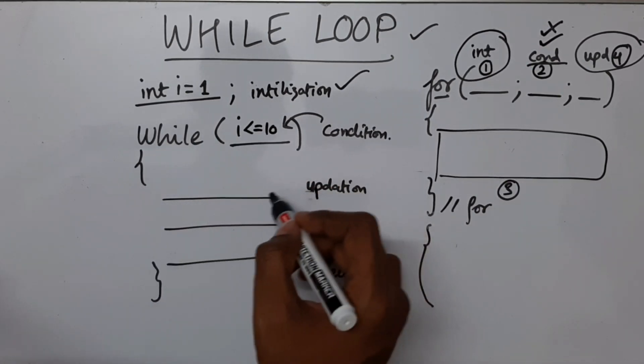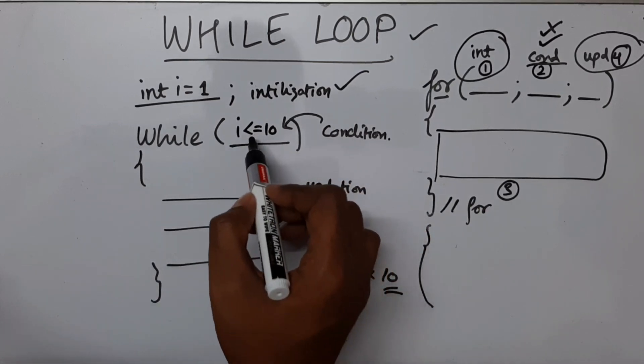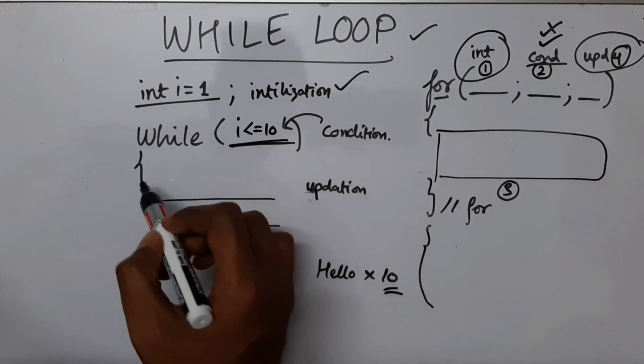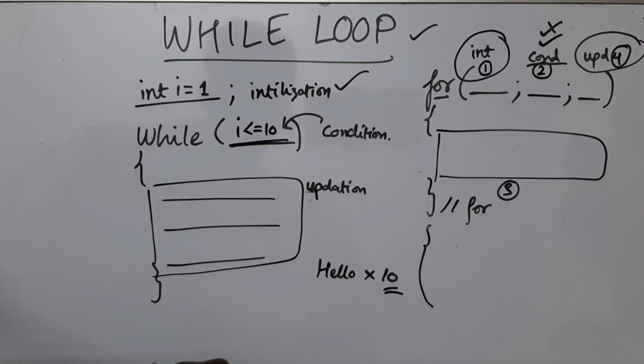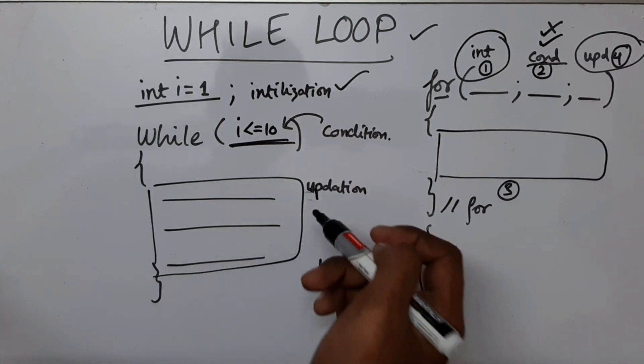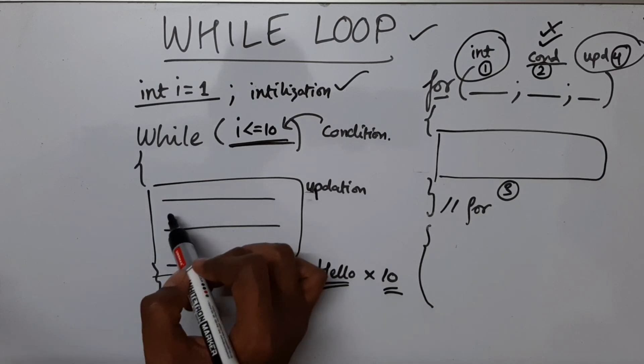I am going to tell while i is less than equal to 10, we have to go inside the loop. Okay, this condition basically means if this is true, you go inside the body of the while loop. Okay, so inside this, what we are going to do is you have to print hello, right? So I'm going to use.